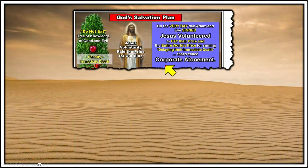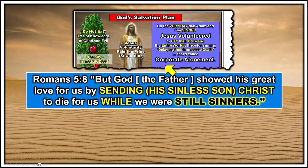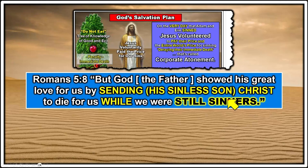Looking at corporate atonement, we find a Bible text in Romans 5:8: 'But God the Father showed his great love for us by sending his sinless Son, Jesus Christ, to die for us while we were still sinners.' God anticipated that we were going to sin and made provisions through his Son Jesus and his sinless life.